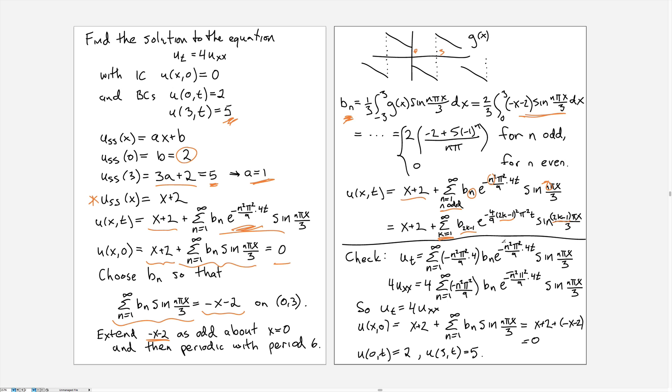And that gets rid of those extra zero terms that we need to include in the sum, but it does make the formula a little bit uglier. And this is just a check. So that gives us an example of the diffusion equation with a non-homogeneous Dirichlet boundary condition.